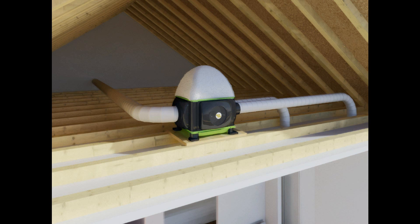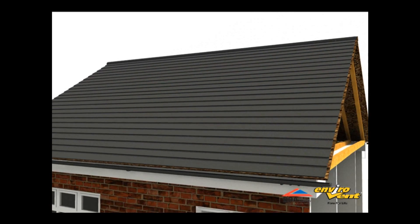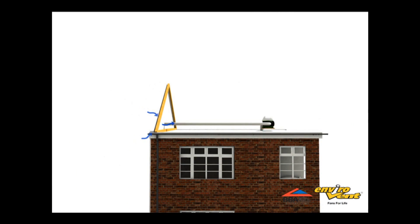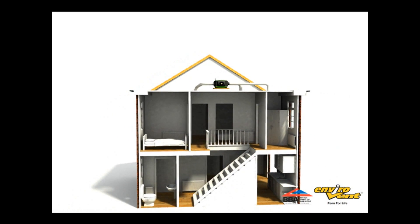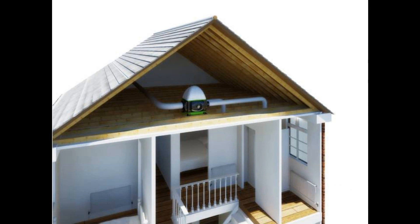When the loft temperature exceeds 25 degrees, the unit automatically detects this and activates a damper that switches the air supply from inside the loft space to the cooler air from outside the property. The result is all year round whole house ventilation, with fresh filtered air introduced into the property in the most energy efficient way possible.